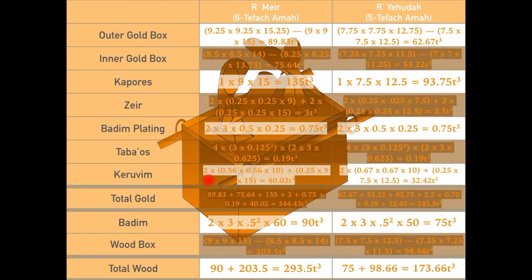Thus, overall, the kruvim had a volume of 40.02 cubic tefachim, according to Rabbi Meir, and 32.42 cubic tefachim, according to Rabbi Yehuda.